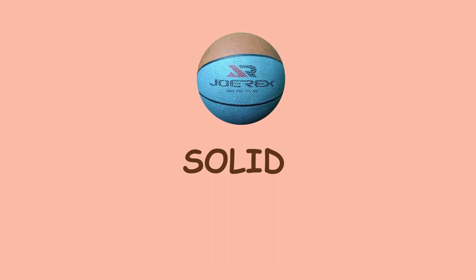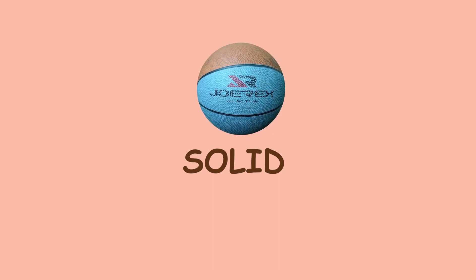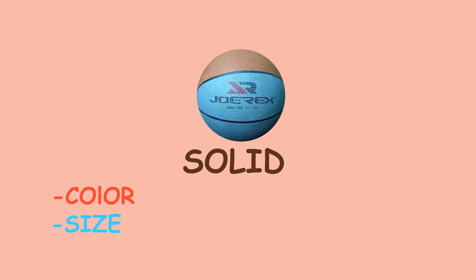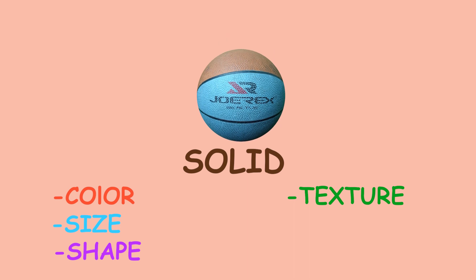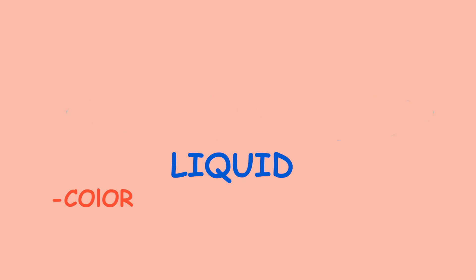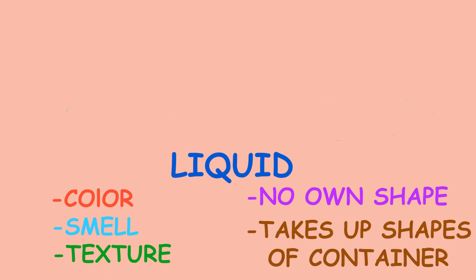Always remember: solids come in different colors and sizes, and have their own shapes. Solids have texture, hardness, and mass. Liquids have color, smell, and texture. They don't have their own shape — they only take up the shape of their container.